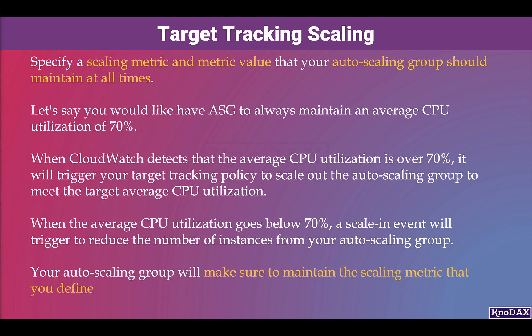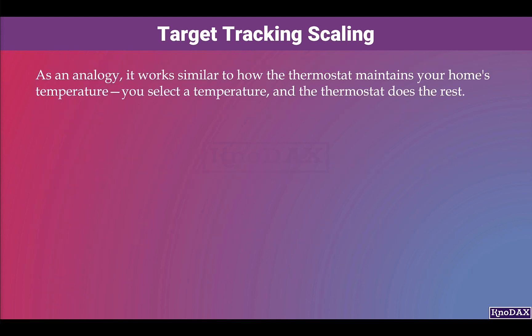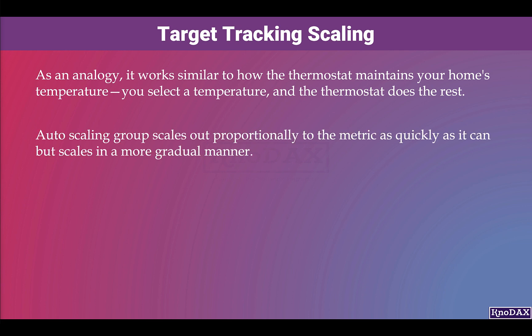When the average CPU utilization goes below 70%, a scale-in event will trigger to reduce the number of instances from your auto scaling group. With the Target Tracking Policy, your auto scaling group will maintain the scaling metric you define — it will add and remove desired instances as needed to maintain the target metric. As an analogy, it works similar to how a thermostat maintains your home's temperature: you select a temperature, and the thermostat does the rest. The auto scaling group scales out proportionally to the metric as quickly as it can, but scales in a more gradual manner.